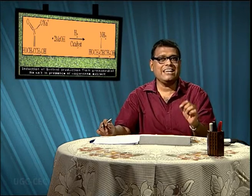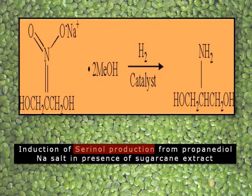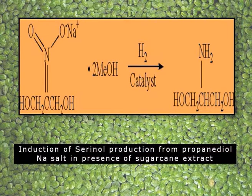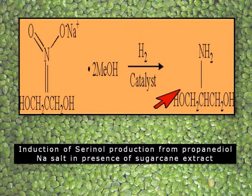A very important aspect is how signaling occurs with the help of toxin. For example, an important toxin signaling is the induction of serenol production from propanediol, which occurs in the presence of Helminthosporium saccharide and sugarcane extract. That sugarcane extract alone is not adequate — whenever Helminthosporium saccharide is present, the formation of serenol from propanediol occurs, which is an important signaling activity induced by Helminthosporium saccharide on plant tissue.